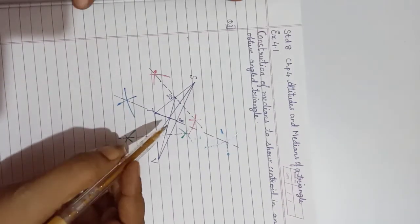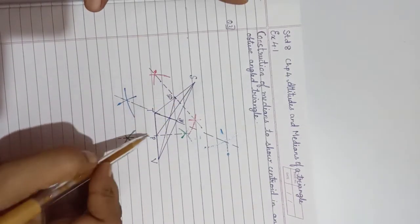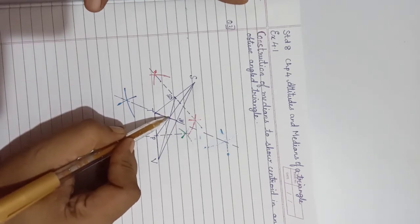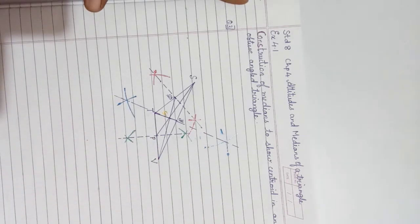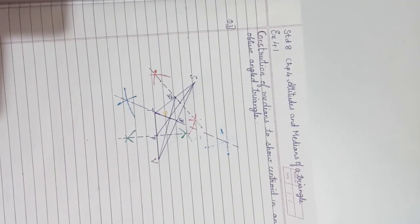The point where all three medians meet is the point of concurrence, labeled as point G. G is the centroid of the obtuse angle triangle.